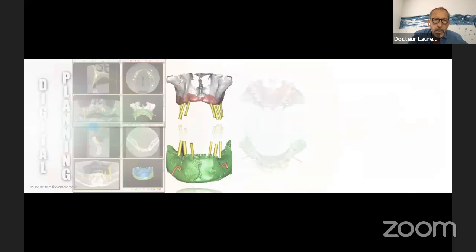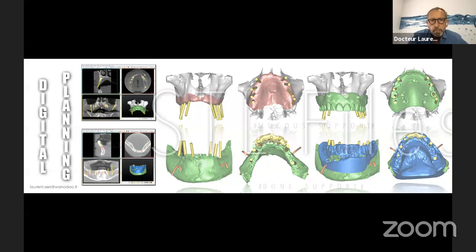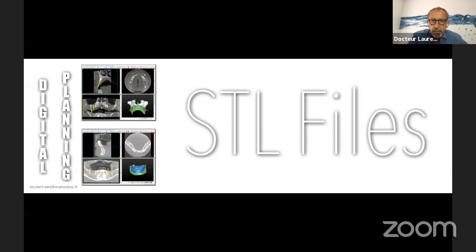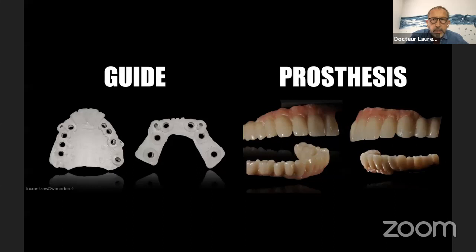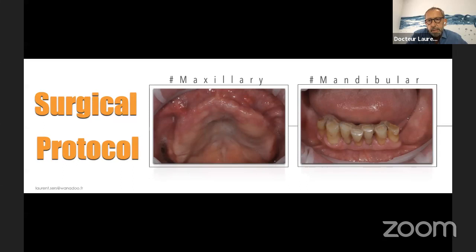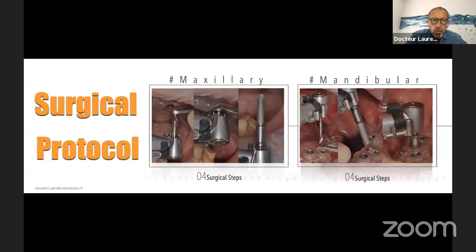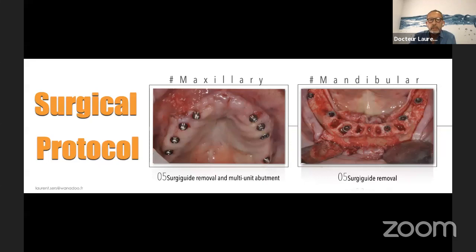Let me explain. First, I did the planning on the upper jaw — it was a mucosa-supported guided surgery. And in the lower jaw, I did a bone-supported guided surgery. I planned all my implants: 18 implants on the upper jaw and 16 implants in the lower jaw. Then after the planning, I took the STL files and before the surgery, I ordered a guide and the prosthesis done before the surgery, thanks to the STL files using the CAD/CAM process. The surgical protocol on the maxillary and mandibular — guide placement for the upper jaw and extractions from the lower jaw, put the guide, extractions, all the drilling steps, then remove the guide.